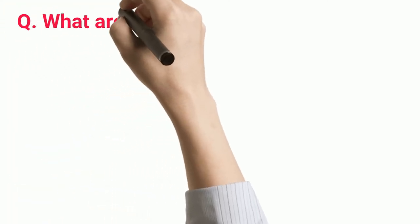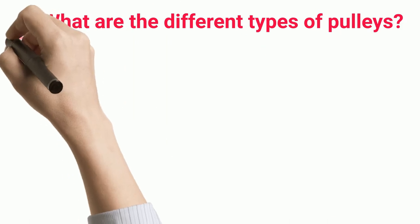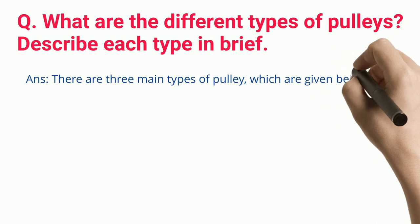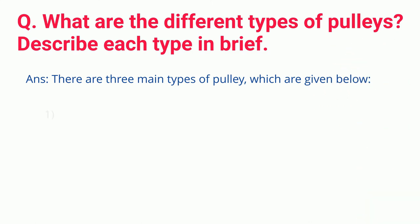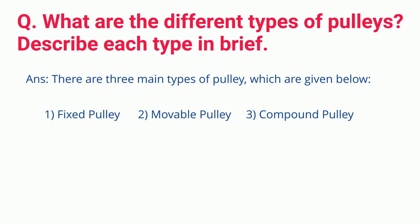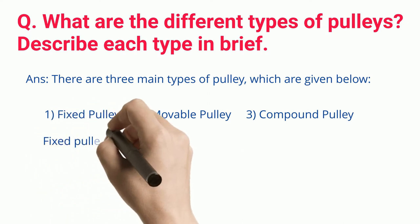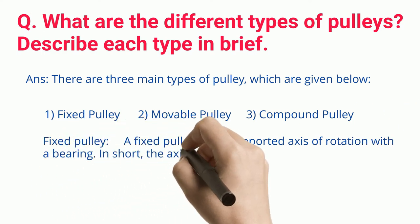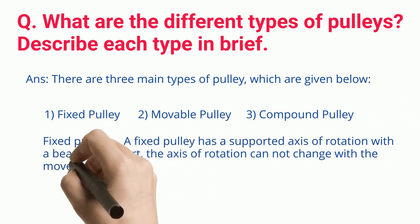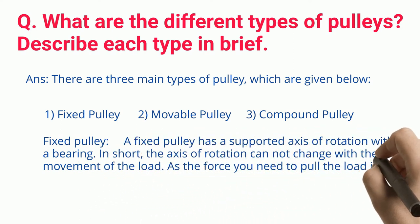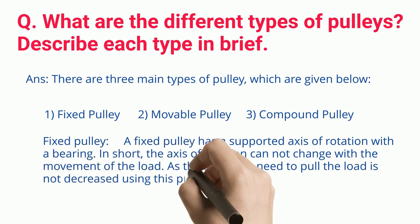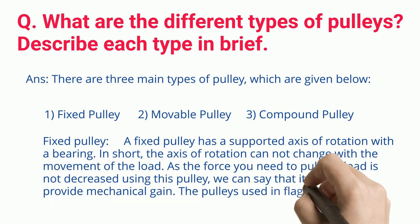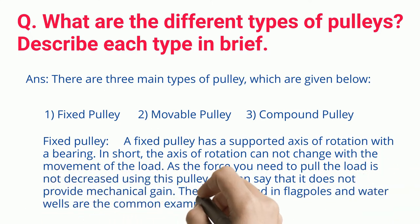Q. What are the different types of pulleys? There are three main types of pulley: Fixed Pulley, Moveable Pulley, and Compound Pulley. A fixed pulley has a supported axis of rotation with a bearing. The axis of rotation cannot change with the movement of the load. As the force you need to pull the load is not decreased using this pulley, we can say that it does not provide mechanical gain. The pulleys used in flagpoles and water wells are common examples of a fixed pulley.